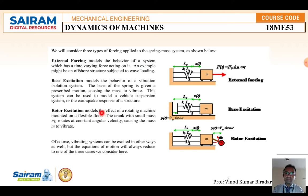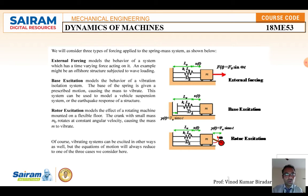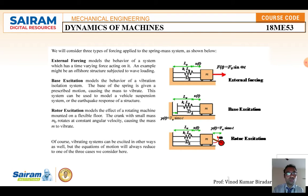For rotor excitation, this models the effect of a rotating machine mounted on a flexible floor, where a small mass M₀ rotates at a constant angular velocity ω, causing the main mass M to vibrate. In the spring-mass-damper diagram, when a rotor connected to the mass rotates, a centrifugal force M₀eω² is generated — this is called the rotor excitation force. These are the three forces considered when solving damped forced vibration problems.